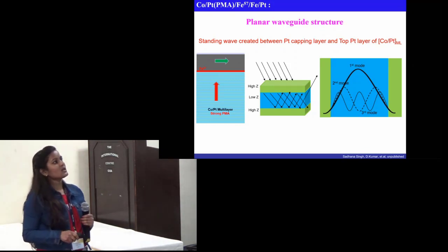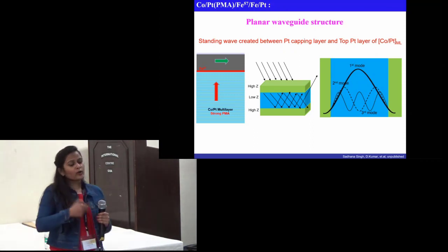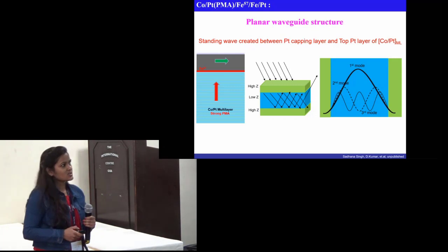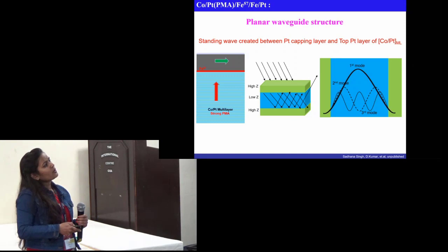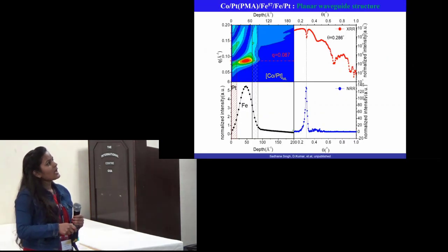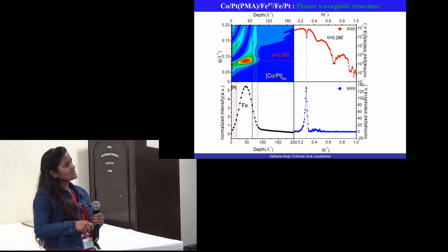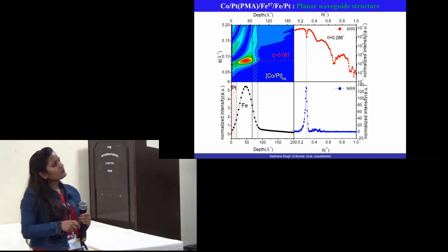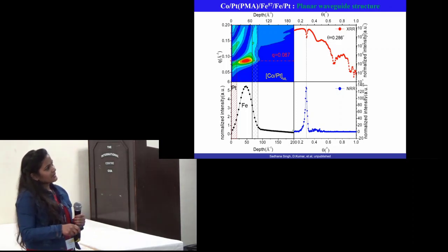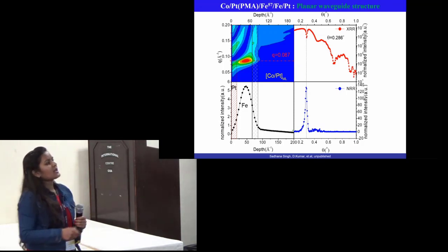In our structure, a waveguide was formed due to the standing wave created between the top platinum capping layer and the top platinum of the CoPt multilayer. This was used to increase the nuclear resonance counts due to multiple scattering from the standing wave. The standing wave formation was confirmed through a contour plot. We observed that at q = 0.087 Å⁻¹ there is a node formation at the Fe-57 interface, confirmed through a dip before the critical angle of the film. Nuclear resonance reflectivity showed a sharp increase in counts at this point, so all measurements were performed at this q value.